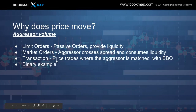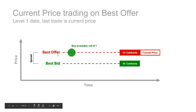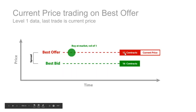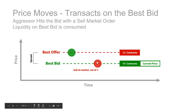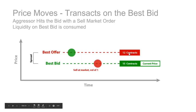Here's current price trading on the best bid and offer. The last trade was a market buy with a volume of one. We can see the spread and the liquidity: 12 contracts on the offer, 16 on the best bid. Now a very simple market sell order — the aggressor hits the bid. They consume the liquidity, so we had 16 contracts, they consumed one, and now we have 15 contracts and price has moved one tick. This is how the market moves — the aggressor is the one that can move the market.